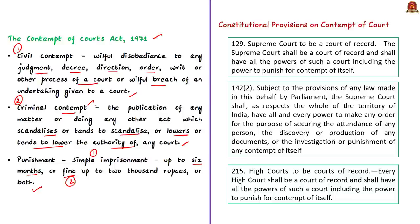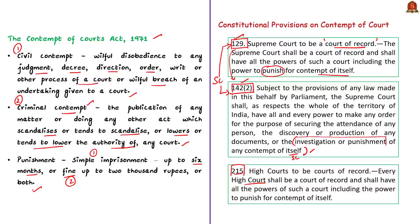The Indian Constitution devotes two articles for dealing with the contempt power of the Supreme Court — Articles 129 and 142(2). Article 129 says that the Supreme Court shall be a court of record and shall have all the powers of such a court including the power to punish for contempt of itself. The same applies to High Courts under Article 215. Article 129 is supplemented by Article 142(2), which deals with investigation and punishment of contempt of the Supreme Court. Article 129 confers substantive power, while Article 142(2) supplements it by specifically conferring the power of investigation and punishment.